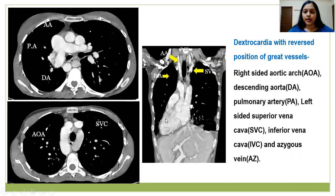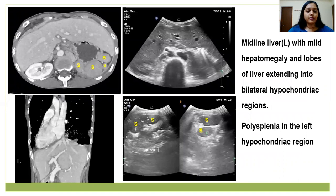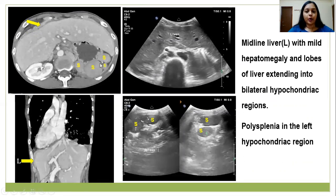Here we can see dextrocardia with reverse positions of the great vessels: a right-sided aortic arch and pulmonary artery, along with left-sided superior vena cava, inferior vena cava, and azygos vein. On ultrasound, we can see reversal of the position of great vessels with the IVC on the left and aorta on the right. There is also reversal of the position of the superior mesenteric vein on the left and superior mesenteric artery on the right. Another finding was that of a midline liver extending into bilateral hypochondriac regions, along with mild hepatomegaly and polysplenia in the left hypochondriac region.